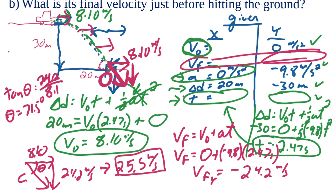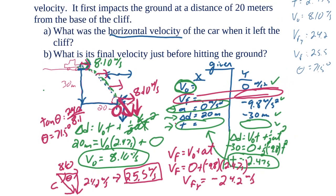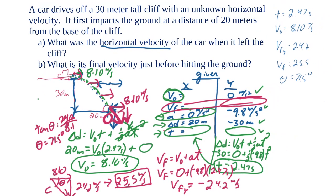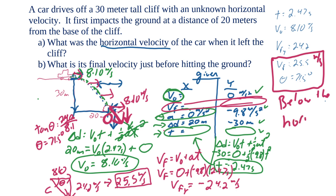So our final answers: the initial speed leaving the cliff was 8.10 m/s, and the final speed right before hitting the ground is 25.5 meters per second at 71.5 degrees below the horizontal. I hope that was helpful — let me know if you have any questions in the comments below, and have a great day!